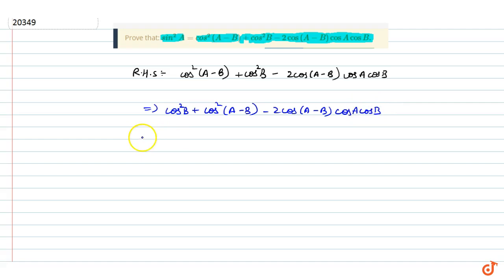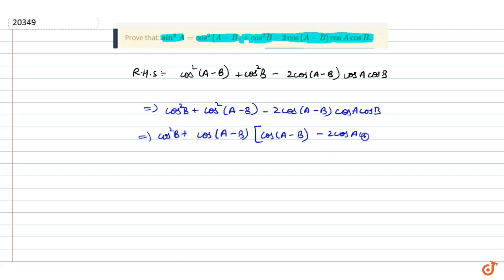Now we have to show that sin squared b plus cos(a minus b), and we note that cos(a minus b) is equal to cos a cos b plus sin a sin b.